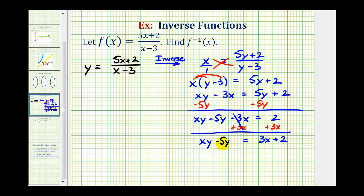Now to solve this for y, we're actually going to have to factor out the common factor of y. So we'll have y times the quantity x minus five equals three x plus two. Now we're one step away. We need to divide both sides by the quantity x minus five. So we have y equals quantity three x plus two divided by the quantity x minus five.